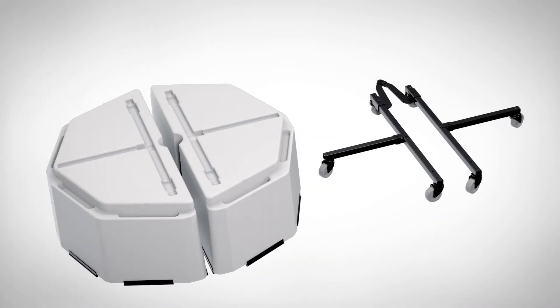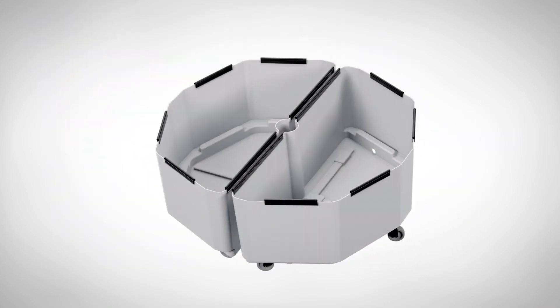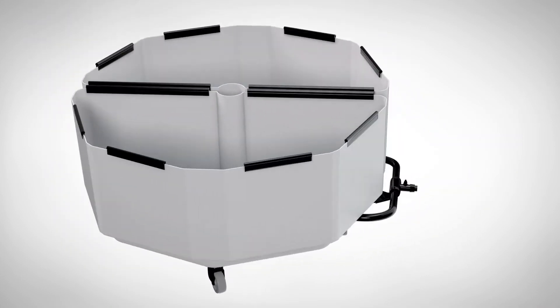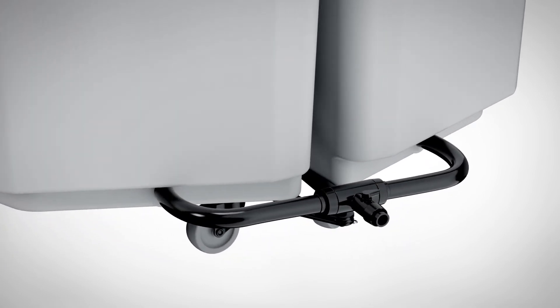Place the tanks on the caster unit aligning the caster frame to the grooves in the bottom of the tanks. When properly assembled the drainage valve will be positioned directly above where the caster unit halves are attached to one another.